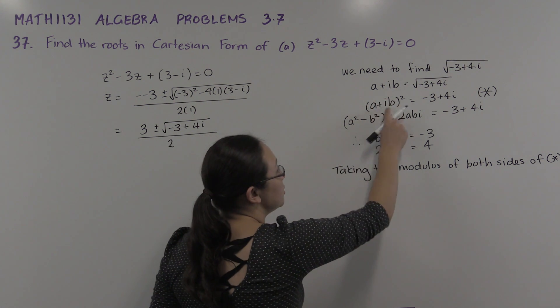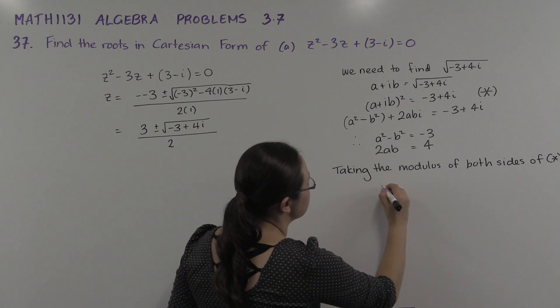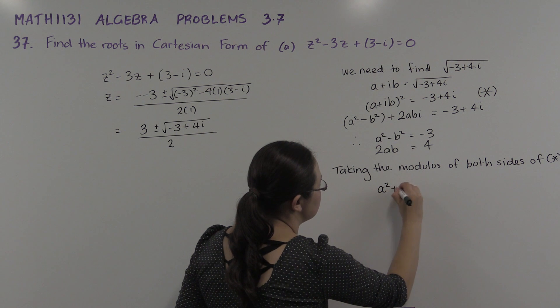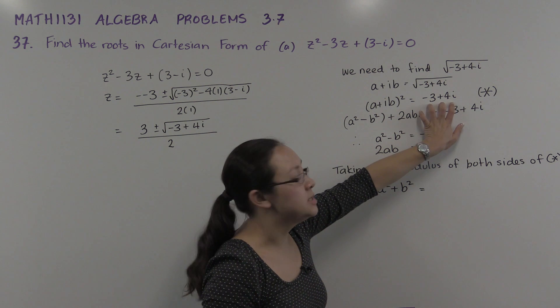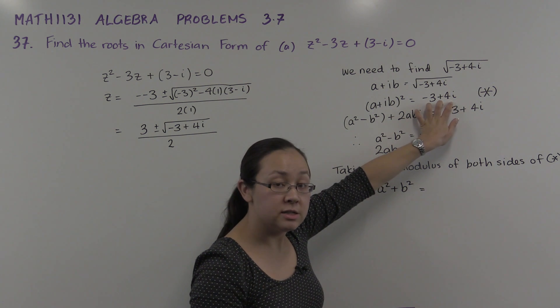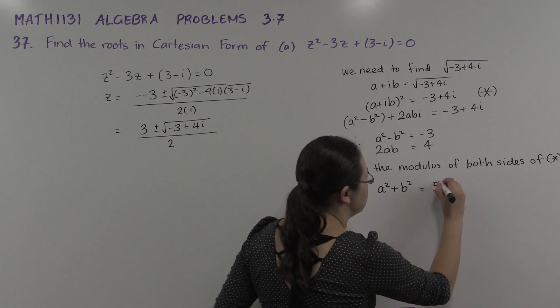So this, the modulus of a + ib is √(a² + b²). So squared, that will just be a² + b². Now the modulus of the right hand side is just √((-3)² + 4²). That's √25, which is 5.